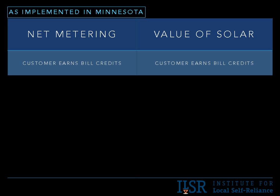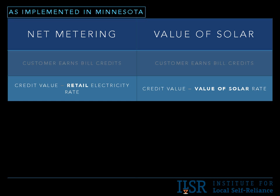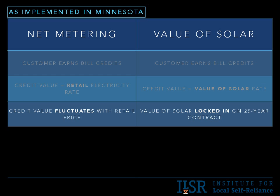There are five areas of comparison, and I want to highlight this is as implemented in Minnesota specifically. First, the customer earns a bill credit — that is exactly the same under both net metering and value of solar. No checks will be cut independently; it's all accounted for within the electric bill. Second is the credit value, which is a key difference. Under net metering, the credit value is the retail electricity rate — about 12 cents per kilowatt hour in Minnesota. Under value of solar, the credit is the value of solar rate, around 14 and a half cents.